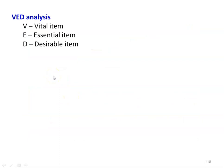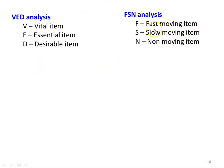VED analysis classifies items as Vital, Essential, and Desirable, and stock is maintained based on that classification. FSN analysis classifies items as Fast-moving, Slow-moving, and Non-moving. These are some of the inventory management techniques applicable to different factories or business enterprises.